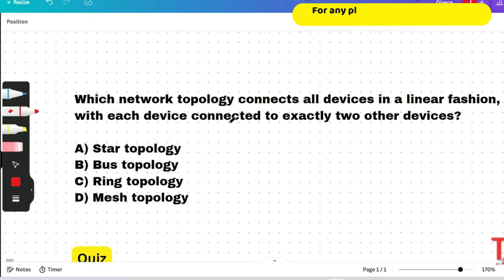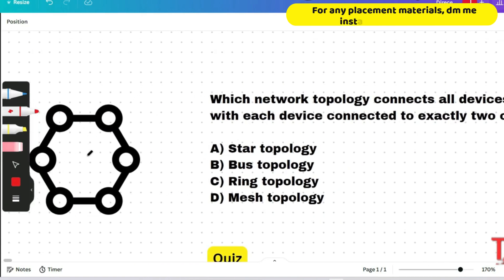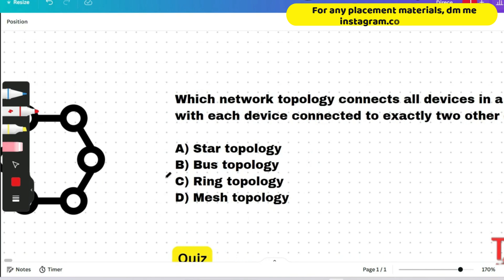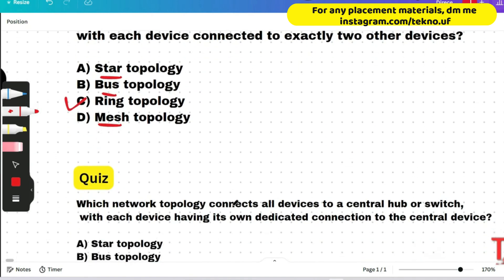Which network topology connects all devices in a linear fashion, with each device connected to exactly two other devices? The image shows the answer — ring topology is correct. In a ring topology, each device is connected to exactly two other devices. If you know the English meanings of star, ring, bus, or how they look, you can answer these questions easily.